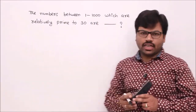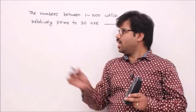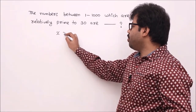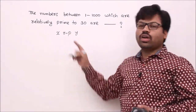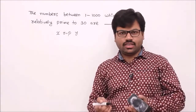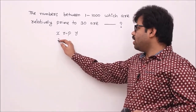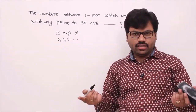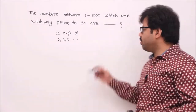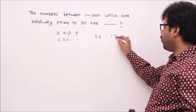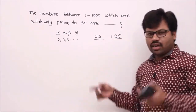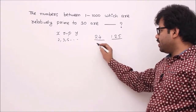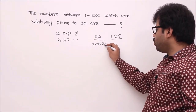Final problem: how many integers between 1 and 1000 are relatively prime to 30? Two numbers are relatively prime if they share no common prime factor. For example, 24 = 2³ × 3 and 125 = 5³ share no prime factor, so they are relatively prime. But 36 = 2² × 3² and 54 = 2 × 3³ share factors 2 and 3, so they are not relatively prime.